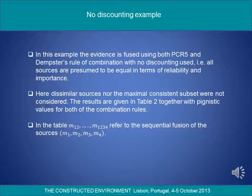No discounting example: In this example, the evidence is fused using both PCR5 and Dempster's rule of combination with no discounting used. This means all sources are presumed to be equal in terms of reliability and importance. Here, dissimilar sources nor the maximal consistent subset were not considered. The results are given in Table 2 together with pignistic values for both combination rules, where M12 to M1234 refer to the subsequent fusion of the sources M1 to M4.